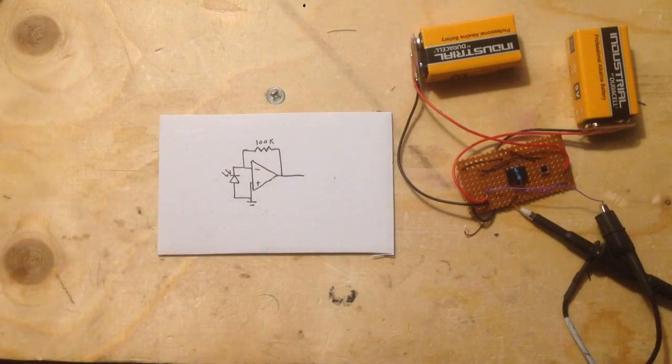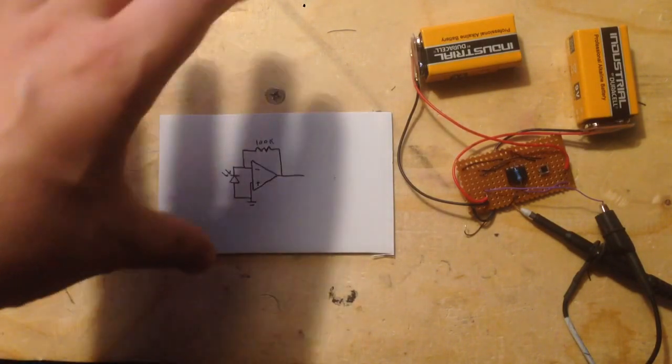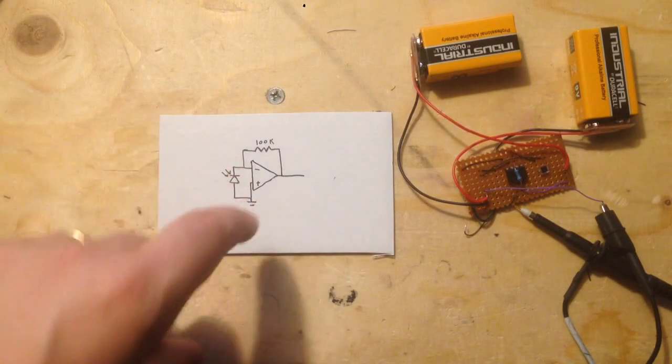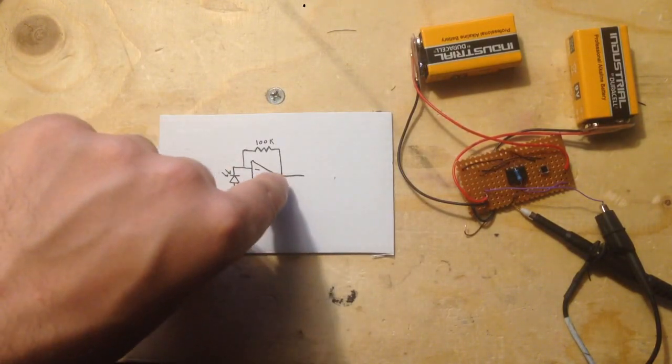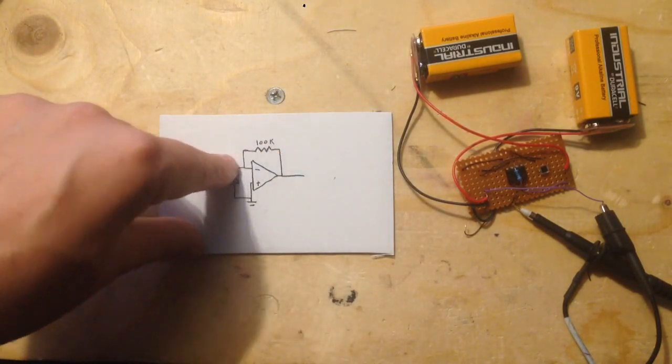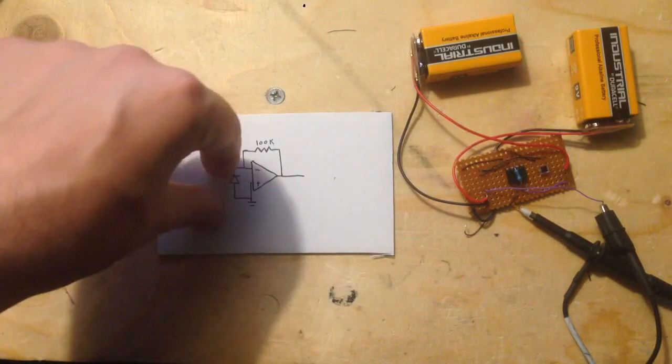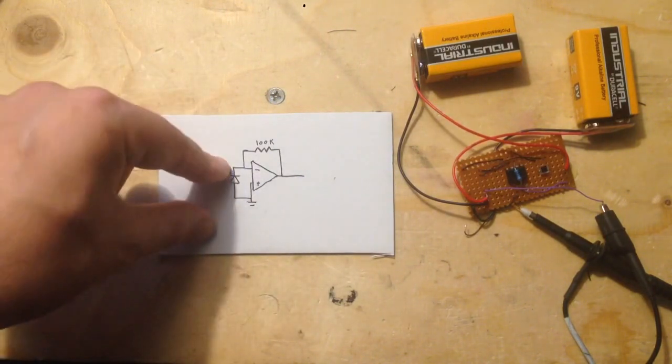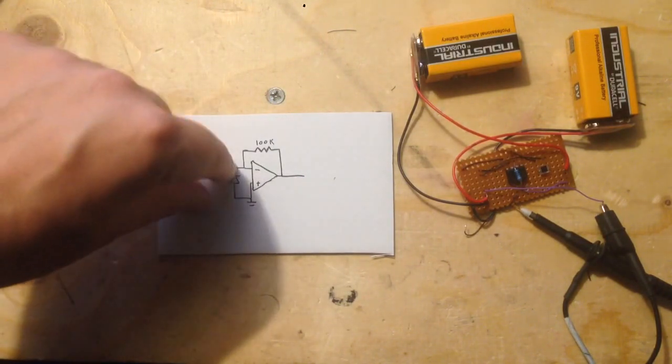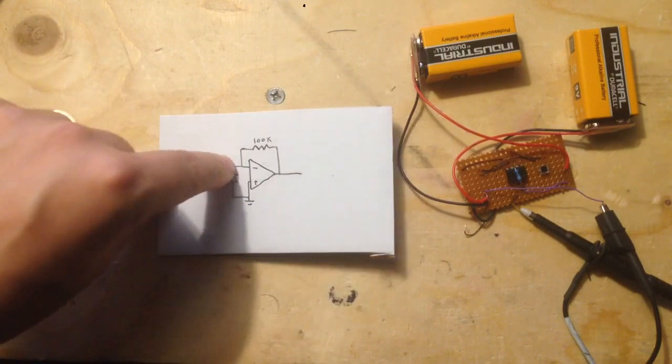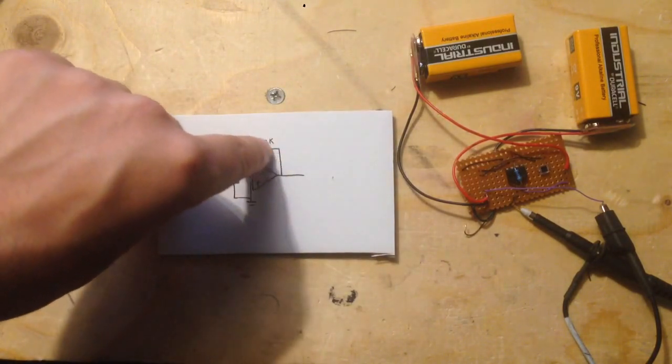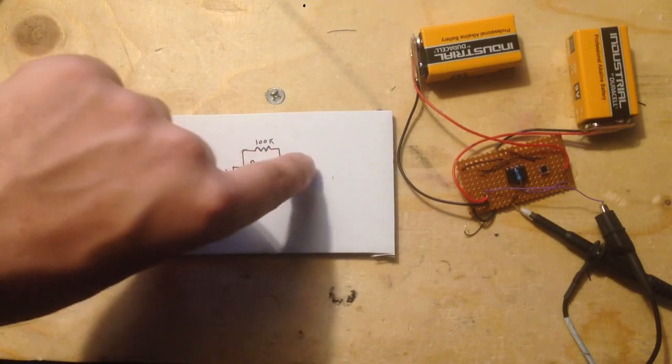You're used to thinking of op-amps in terms of voltage, but really in this sense it's much easier to think of it in terms of current. It produces a current through the feedback resistor to exactly counteract the current produced by the photodiode. So this point becomes zero, and the amount of voltage required to produce that current is your output.